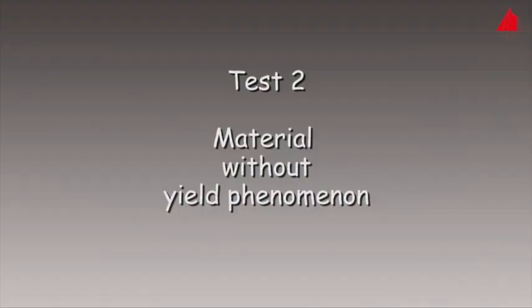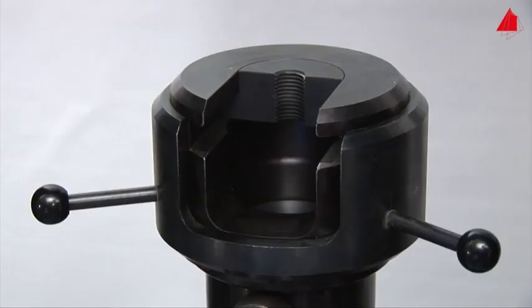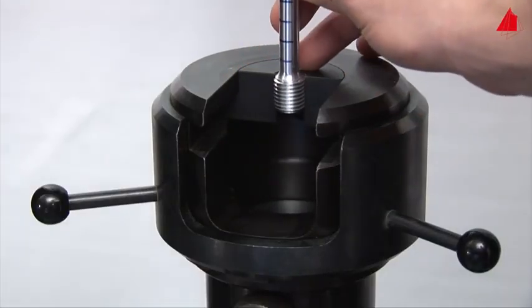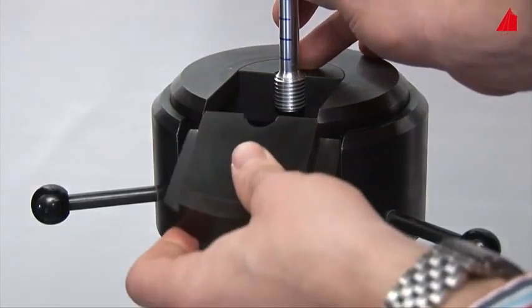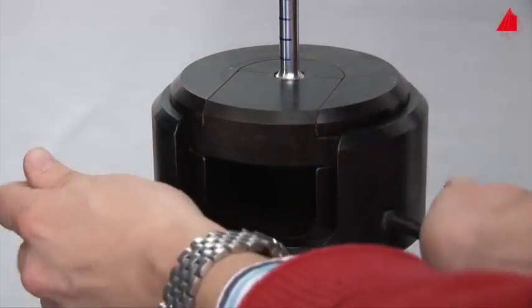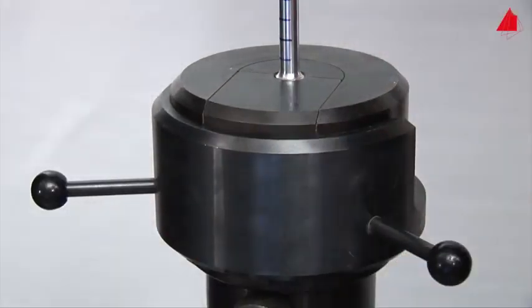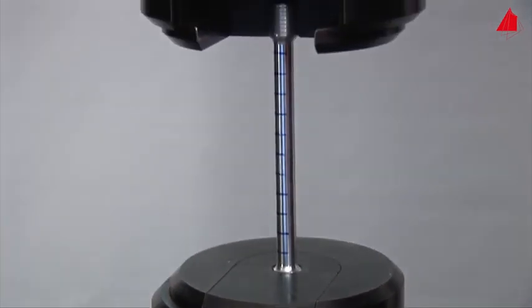In the second tensile test, a material without yield point phenomenon is to be tested. In this case, it is a precipitation-strengthened aluminum alloy.